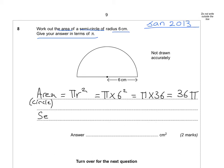The area of the semicircle is then half of this, which is 36 pi divided by 2, which we can write as 18 pi. So the final answer is 18 pi centimetres squared, leaving our answer in terms of pi.